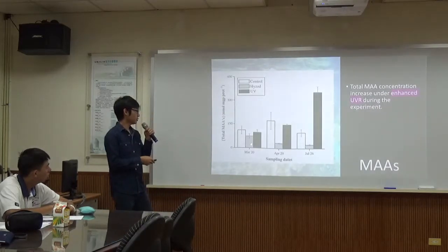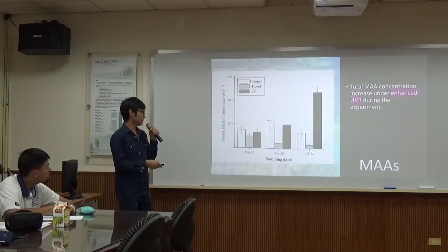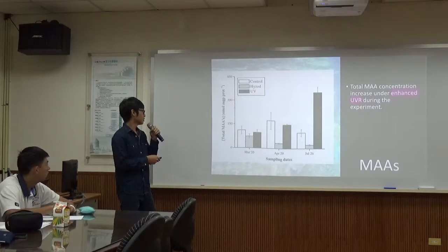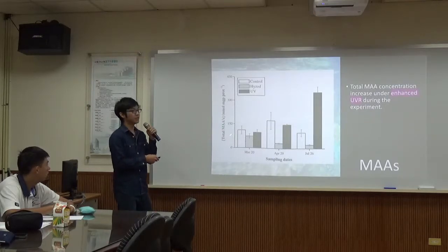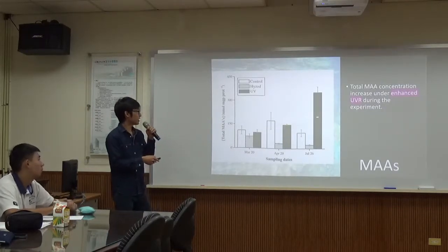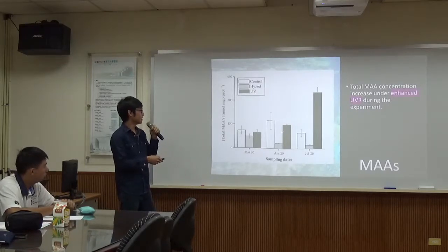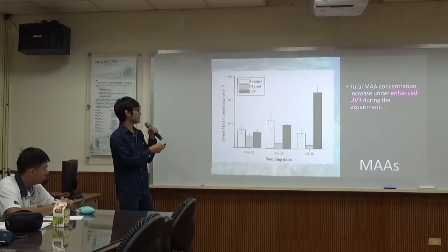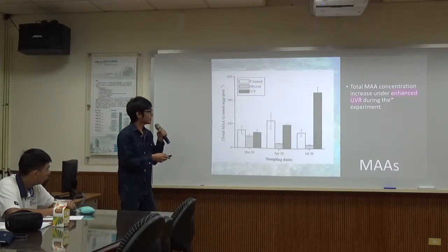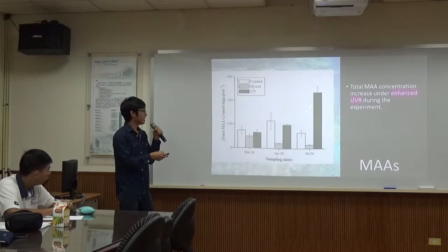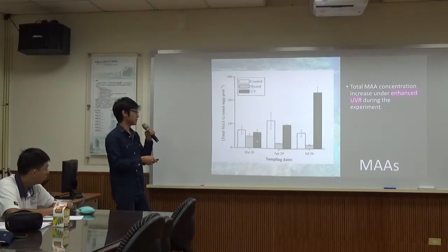And look at this figure. The X axis is time. The Y axis is the total MAA concentration. The black bar is enhanced UVR, the gray bar is UV-blocking panel, and the white bar is control. You can see that under enhanced UVR, the total MAA concentration increases during the experiment.